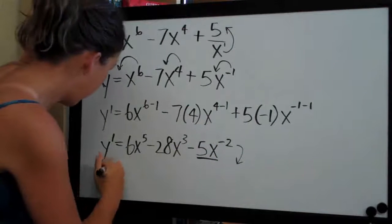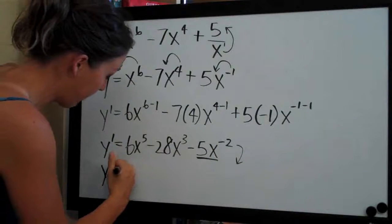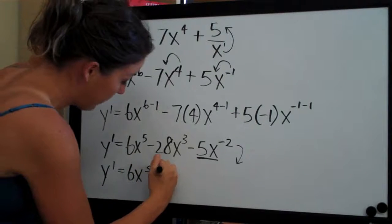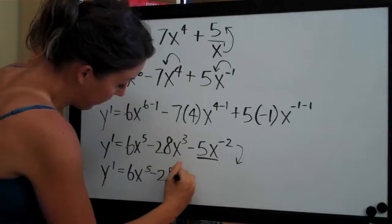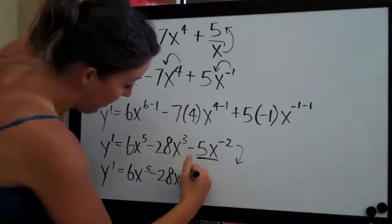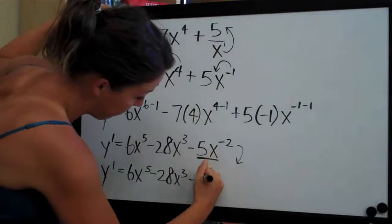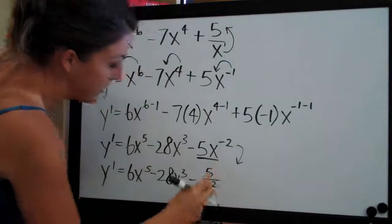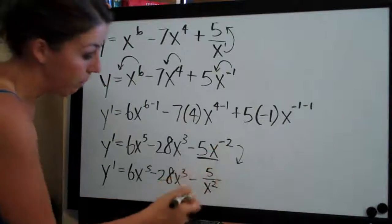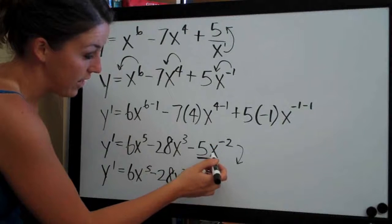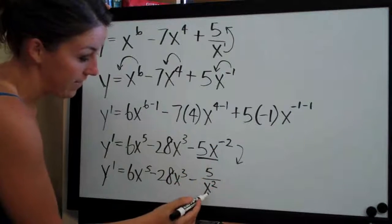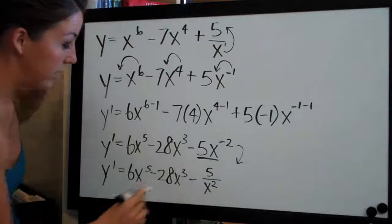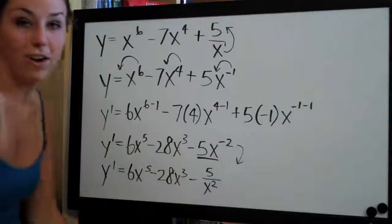So we'll end up as our final answer with y prime equals 6x to the 5 minus 28x to the 3 minus 5 over x squared. And notice that all we did was change the sign on the exponent from a negative to a positive. So now instead of x to the negative 2, we have x squared and that's now in the denominator of the fraction and this is a much cleaner answer which ends up being our final answer.